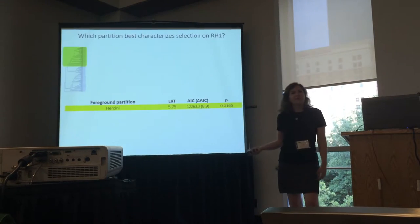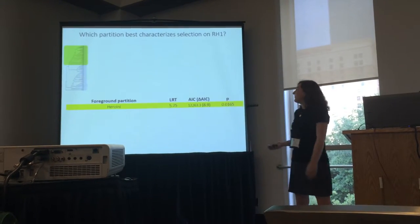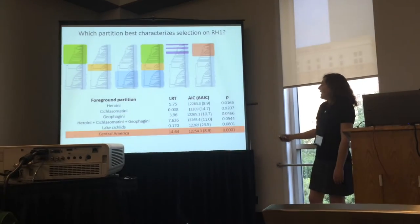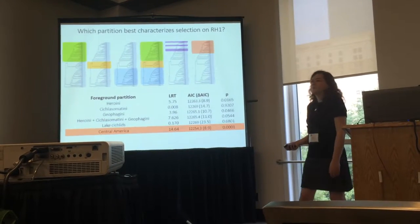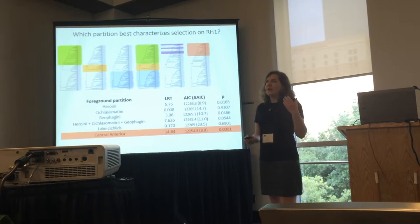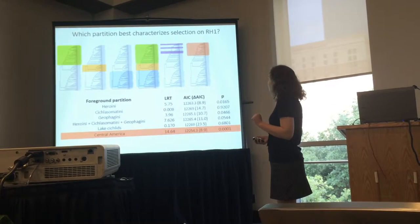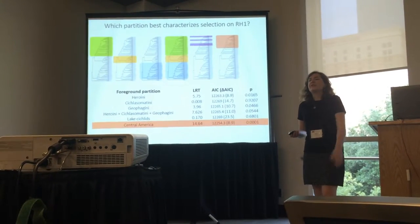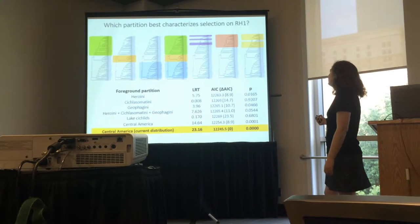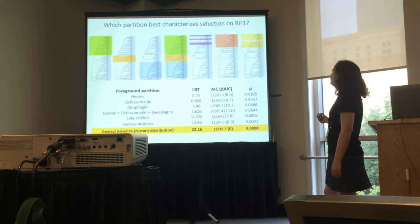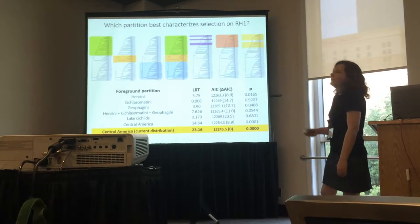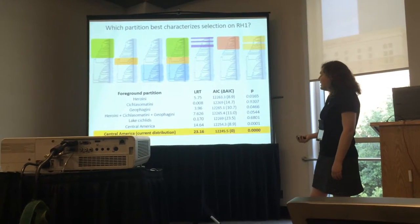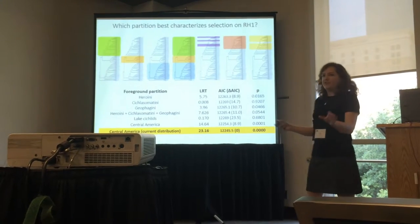We can compare the fit of our different models, and what we arrive at is the Central American partition being the superior fit. However, the full story is more complicated — there are some South American members embedded within the Central American clade. These cichlids were able to reinvade South America, and when we incorporate that into our model, we actually find the superior fit.